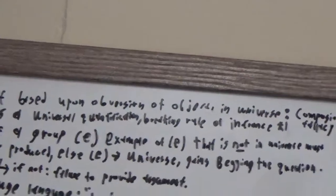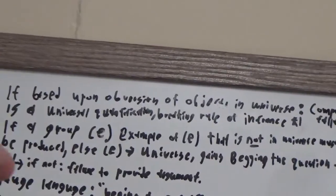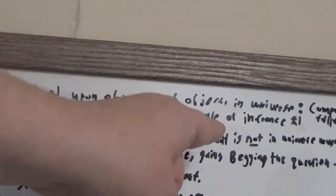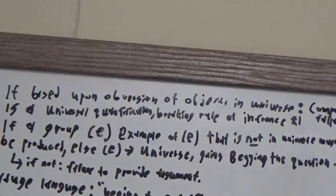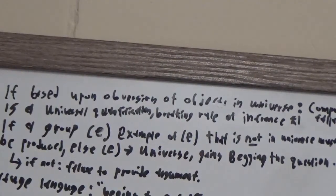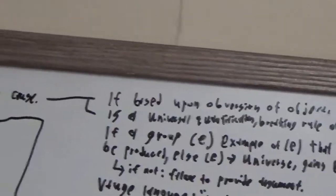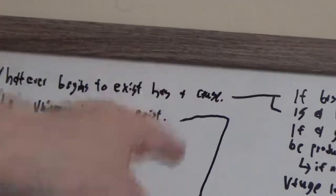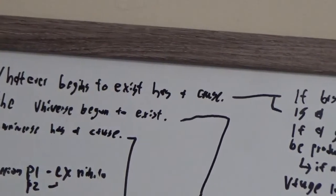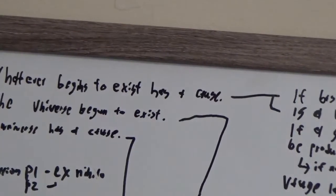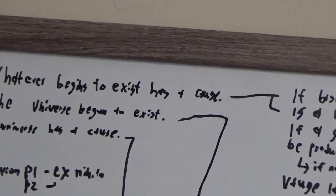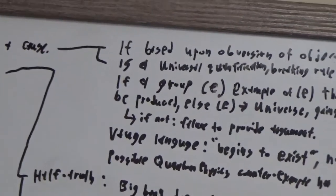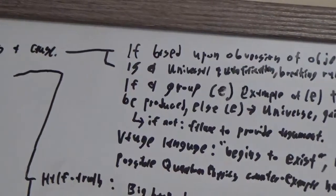Now, this is also a universal quantification, and it breaks the rule of inference. Because it is not known that it's universally true that whatever begins to exist has a cause. At best, you could say the things that we observe have a cause, but then you're only talking about the things that we have observed inside the universe, and then you go right back to the compositional fallacy.